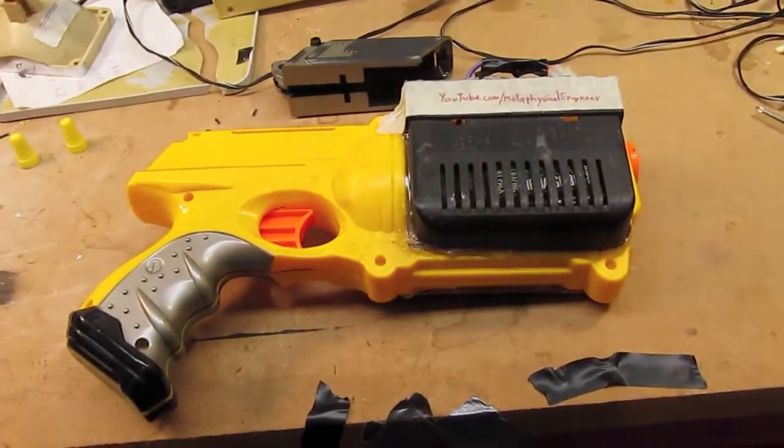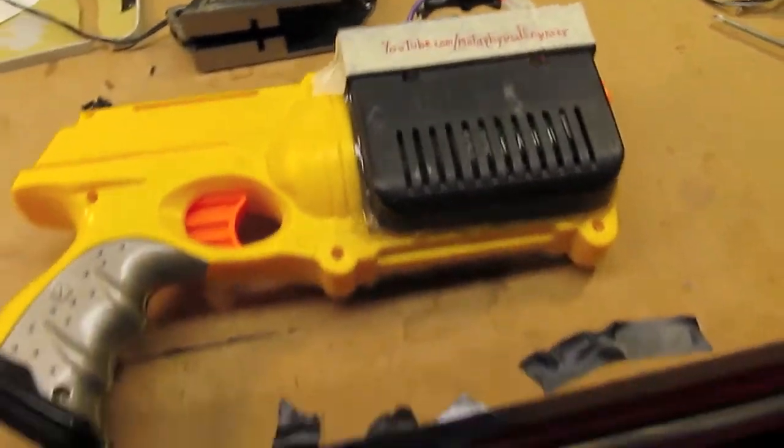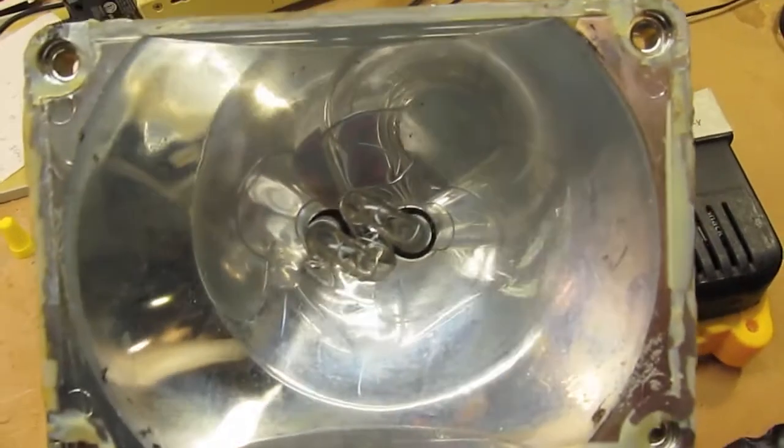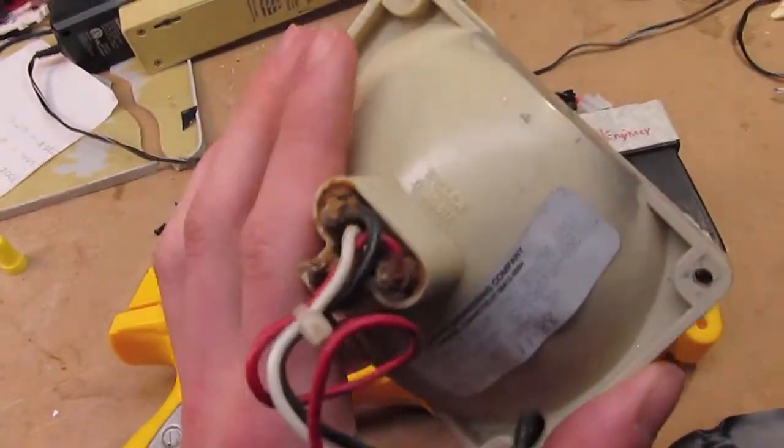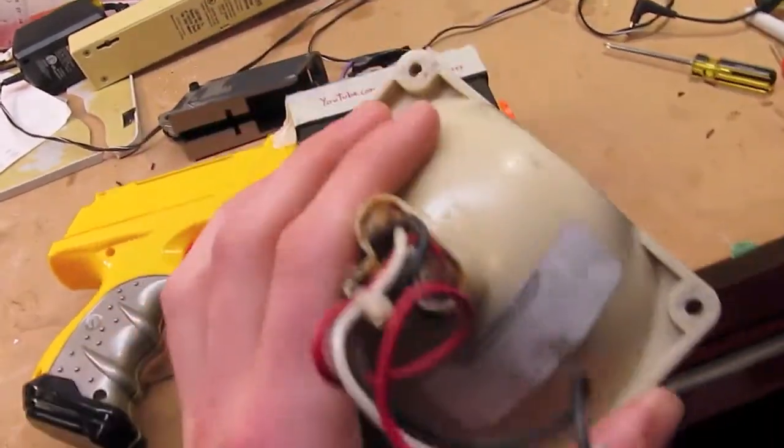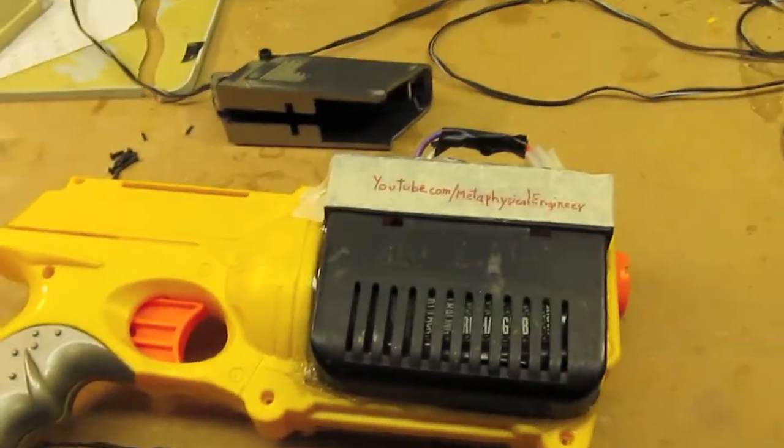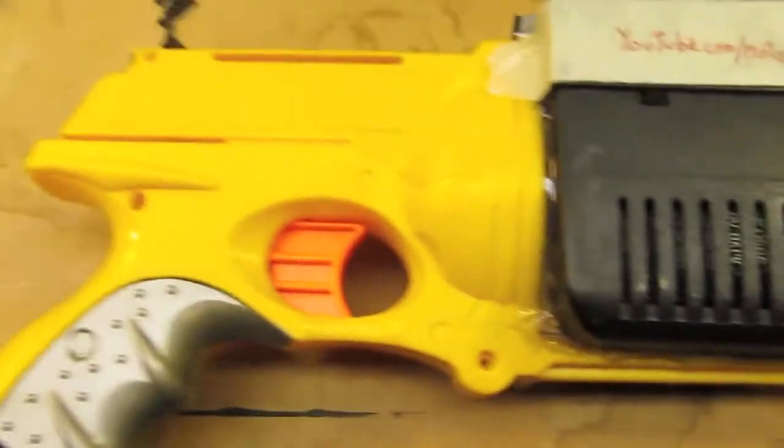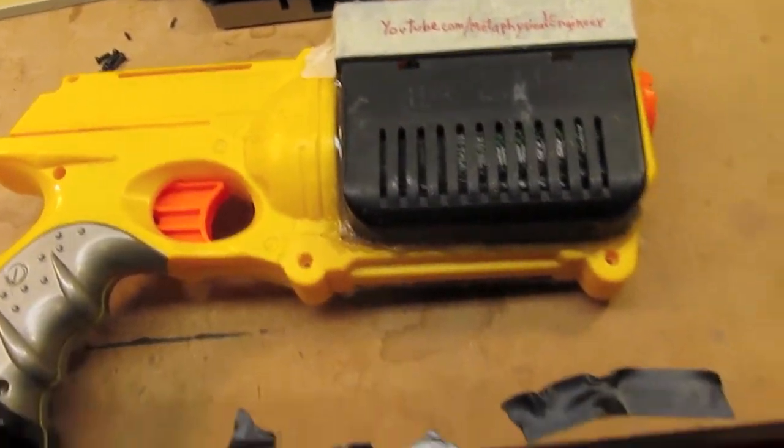And once those were fixed the strobe light worked fine but I had no use for it because other than a very blinding and distracting display element it wasn't really going to do much for me since it's not the sort of thing you can actually have on a car because of the other connotations of flashing lights. So I kept it on the shelf for a couple years.